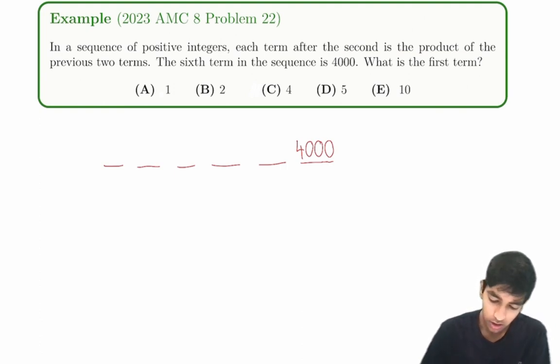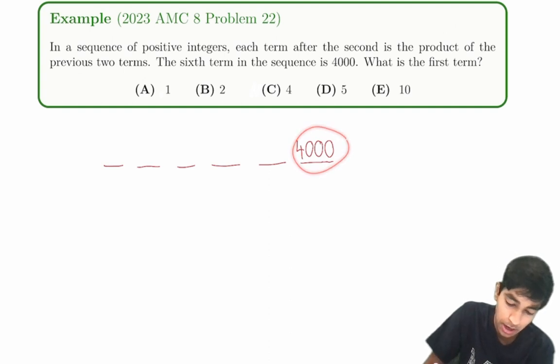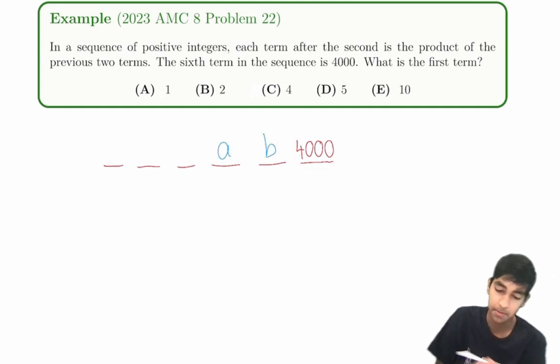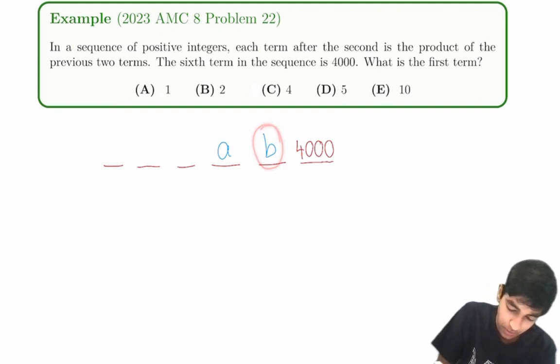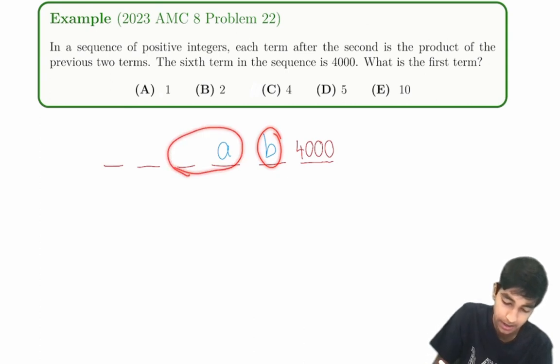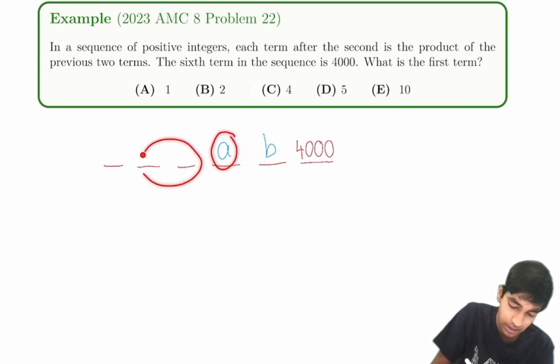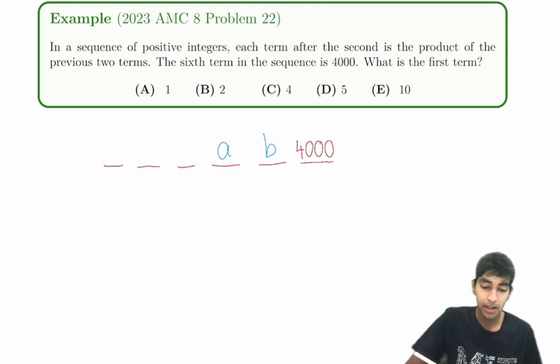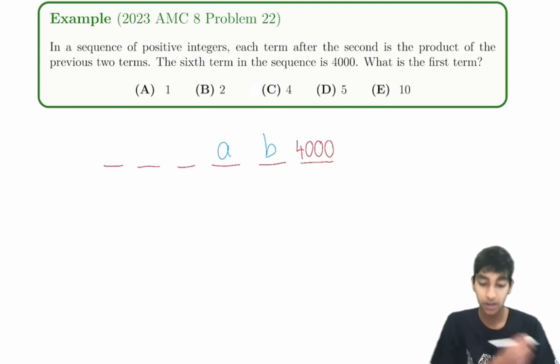Cool. So 4,000 will be the product of these two terms, whatever they might be. Okay, and then we must have that this number, we also must have that this number is the product of these two terms. And this number is the product of these two terms. And this number is the product of these two terms, right? Because each number after the second is just the product of the previous two terms.